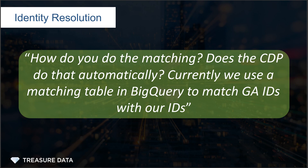Alternatively, you can build a matching table directly in the CDP rather than doing it in BigQuery. That will allow you to match the GA IDs with internal IDs as you do now, but doing it in the CDP rather than BigQuery.